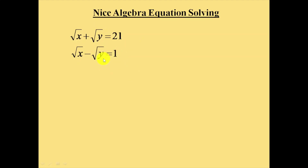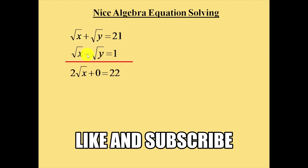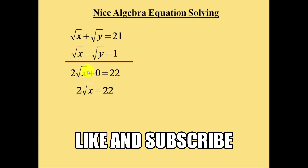Now add these two equations. The plus square root of y and minus square root of y cancel each other, becoming 0. The two square root of x terms combine to give 2 times square root of x. On the right side, 21 plus 1 equals 22. So 2 times square root of x is equal to 22.